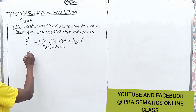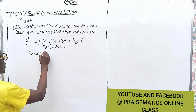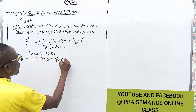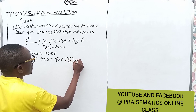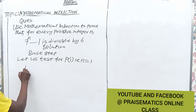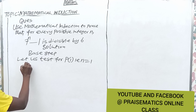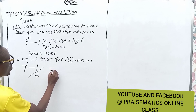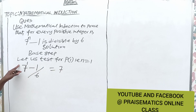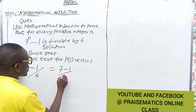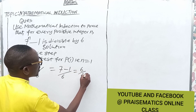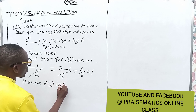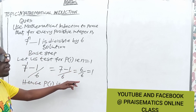Let's look at the base step, Case 1. Let us test for p(1), that is n equals 1. From the equation we have 7 raised to power 1 minus 1. Is it divisible by 6? This gives us 7 minus 1, which is 6, and 6 is divisible by 6, which gives us 1. Hence p(1) is true because it is divisible.